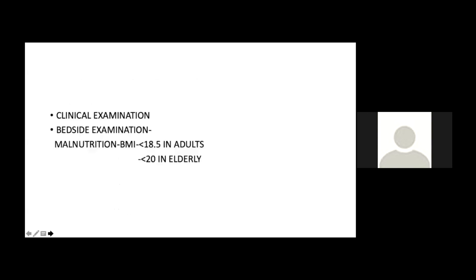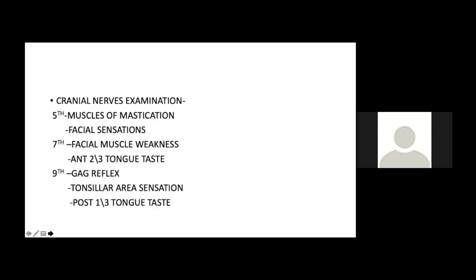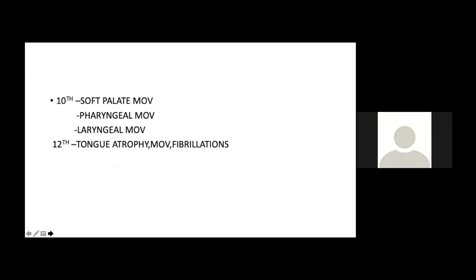In clinical bedside examination, assess for malnutrition and test cranial nerves. The 5th nerve supplies muscles of mastication and facial sensation. The 7th nerve: facial muscle weakness causes pooling of bolus in the gingivobuccal sulcus. The 9th nerve is tested via gag reflex, tonsillar sensation, and posterior one-third tongue sensation. The 10th nerve via soft palate, pharyngeal, and laryngeal movement. The 12th nerve palsy shows tongue atrophy, decreased movement, and fibrillations.